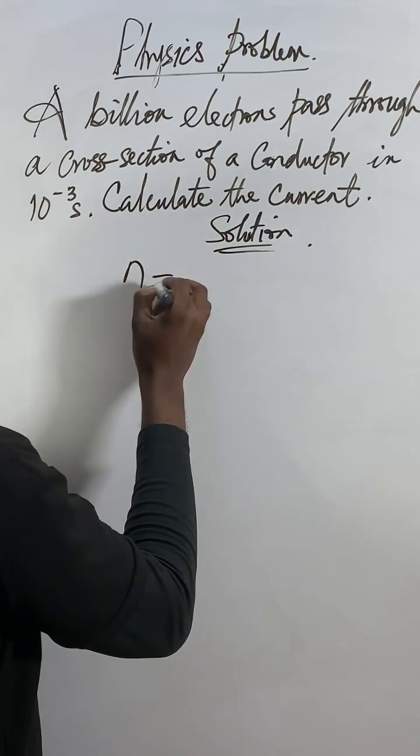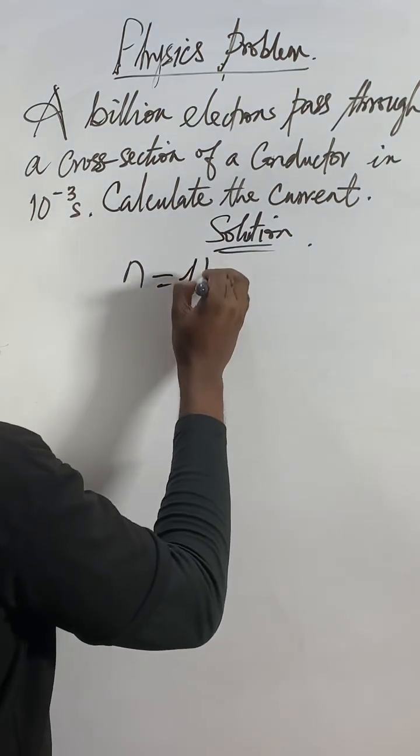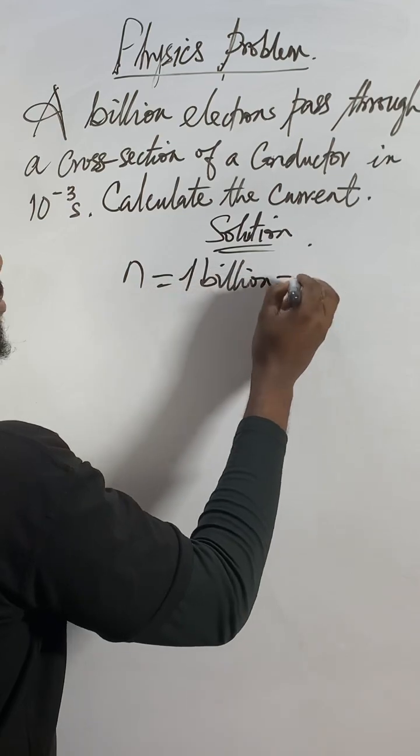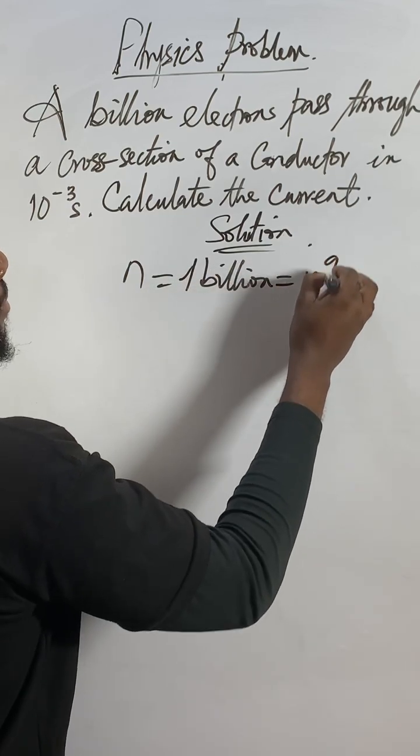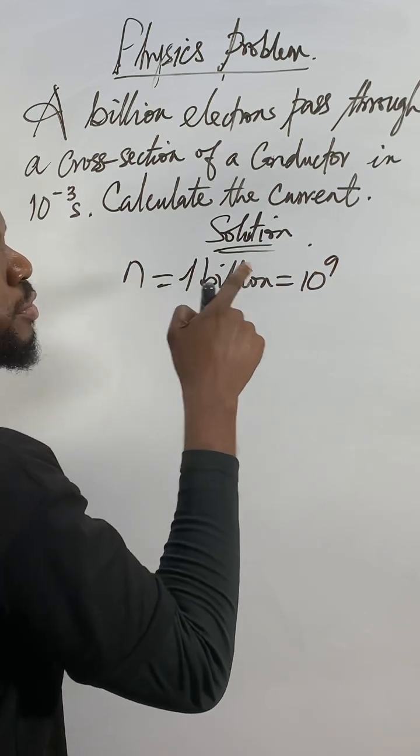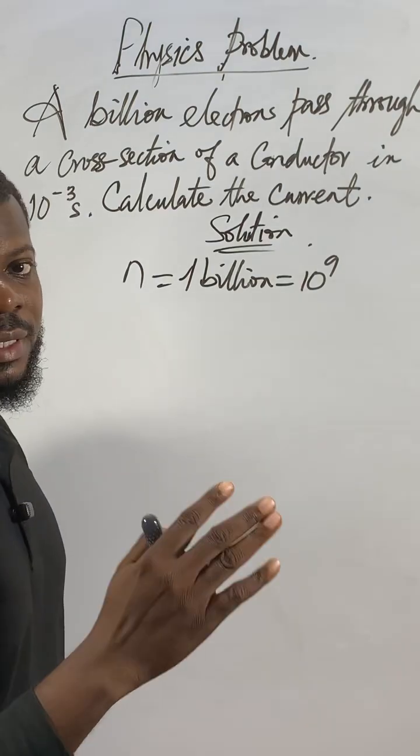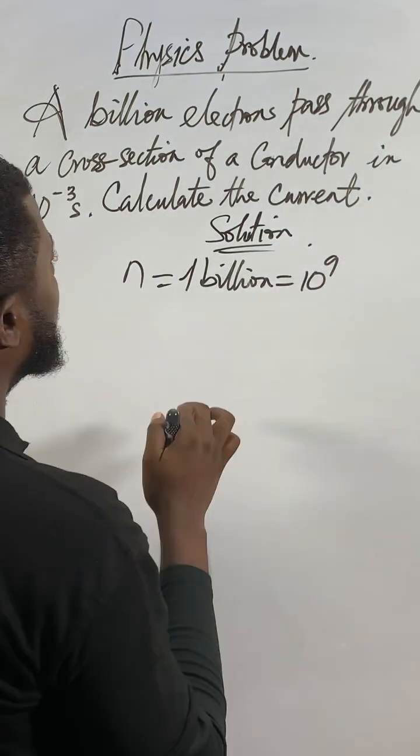You don't say the number of electrons, 1 billion, and 1 billion is the same thing as 10 to the power of 9, that means 1 followed by 9 zeros. So 1 billion is the same thing as 10 to the power of 9.